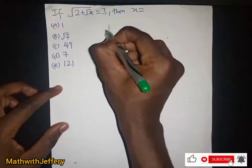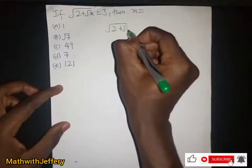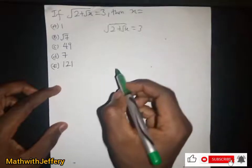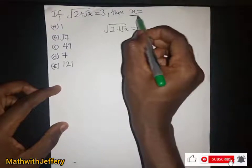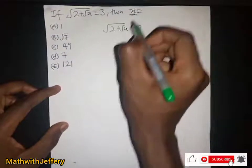So we have root 2 here plus root x here being equal to 3. So now we have to find x. Now what would be x in this case?